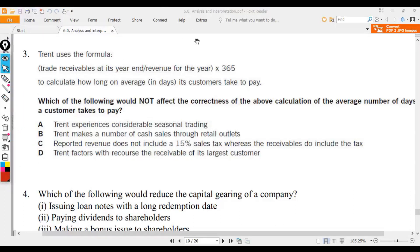You see the revenue here, they use full revenue. It could contain cash sales so this formula is not perfect. But out of the four here, which one will not affect the correctness? Number one: the company experiences considerable seasonal trading. It will because you use the receivable at year-end, right?